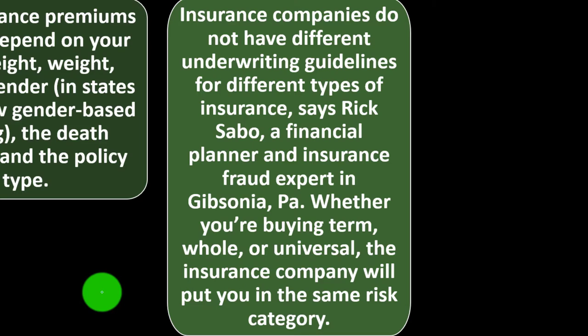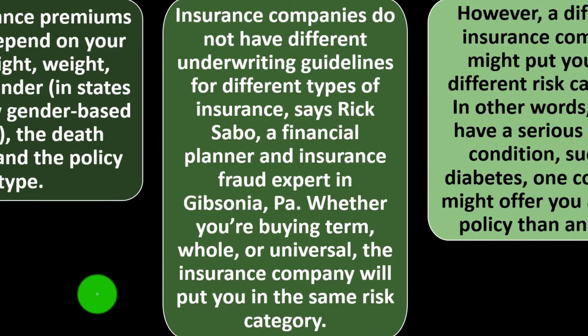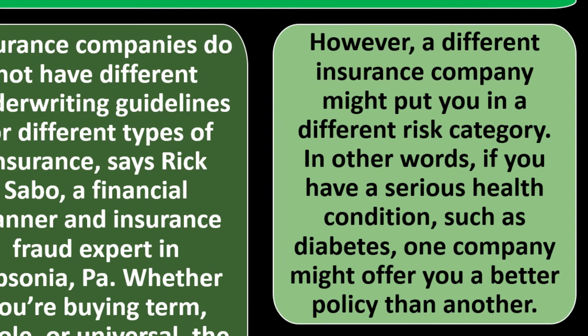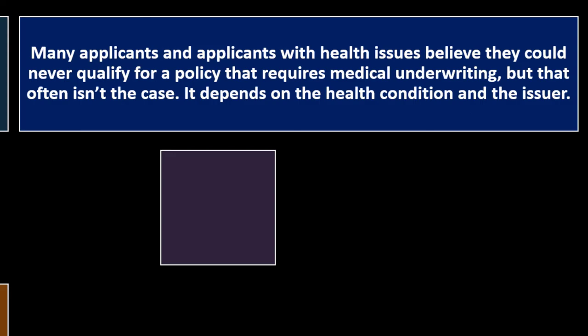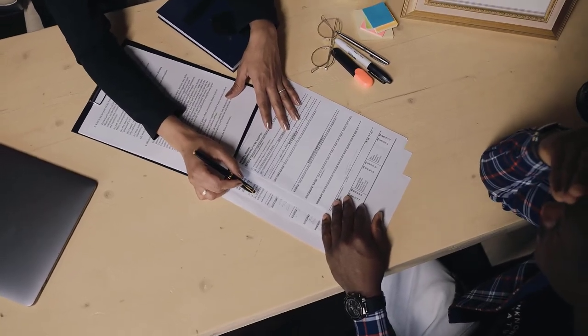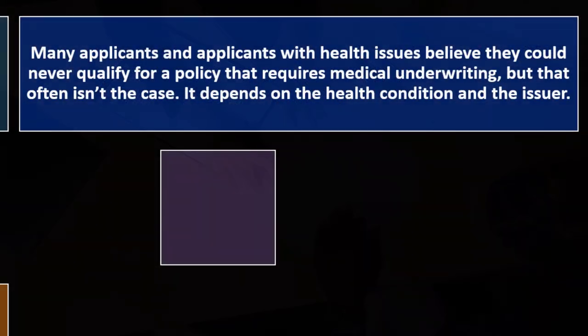Insurance companies do not have different underwriting guidelines for different types of insurance, says Rick Sabo, a financial planner and insurance fraud expert. Whether you're buying term, whole, or universal, the insurance company will put you in the same risk category. However, a different insurance company might put you in a different risk category. If you have a serious health condition such as diabetes, one company might offer you a better policy than another. Many applicants with health issues believe they could never qualify for a policy that requires medical underwriting, but that often isn't the case.